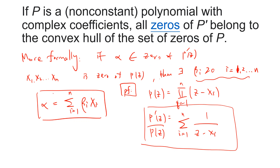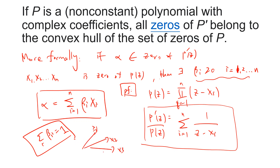More formally: if alpha is a zero of P'(z) and x1 up to xn are zeros of P(z), then there exist beta_i greater than zero for i from 1 to n such that alpha is a linear combination of those zeros. Not only that, you can prove that the sum of all beta_i equals one. This is the idea of the convex hull — x1, x2, x3 define a region, and the zeros of P' must appear in that region.